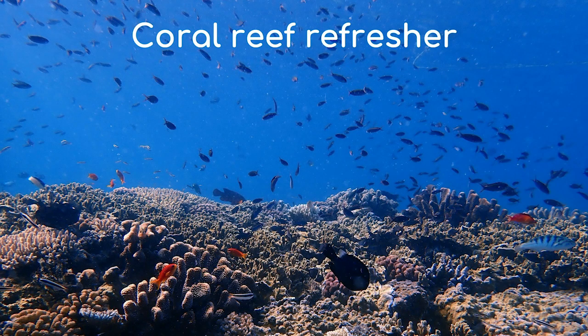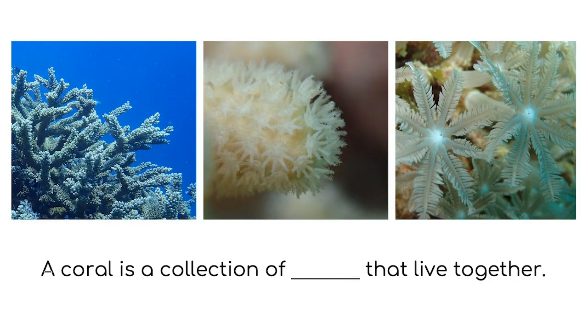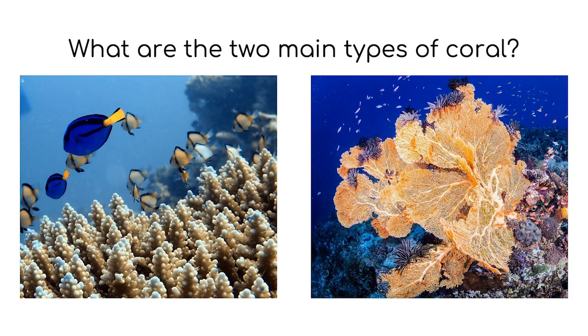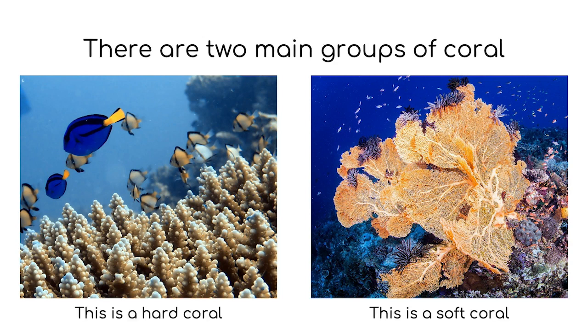In the last presentation, we learned that coral reefs are really important to the health of our ocean and they support life on the reef. A coral is a collection of animals that live together — it's called a polyp. There are hard corals and soft corals. Hard corals have a skeleton and they form the main reef structure, and soft corals don't. There are more than 2,000 types of coral and they come in all kinds of shapes and sizes.